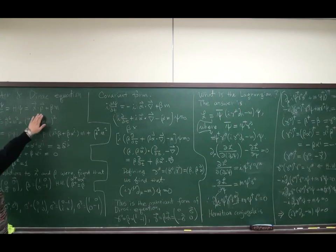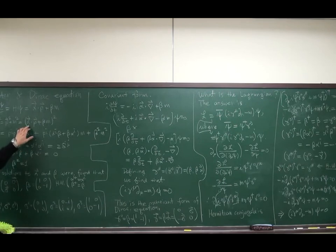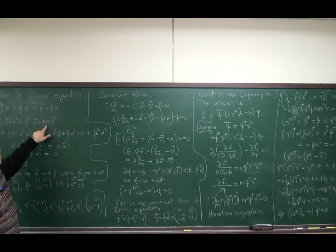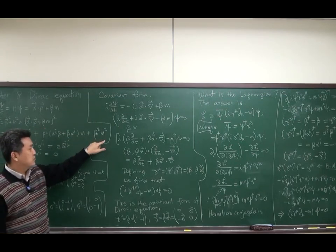And if I square this, I have alpha dot p plus beta m squared. And the p squared vector has alpha i, alpha j. And crossing term is p i, alpha i, beta, beta, alpha i, m. And beta squared term is beta squared m squared.